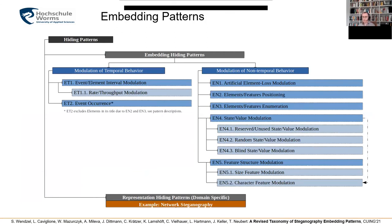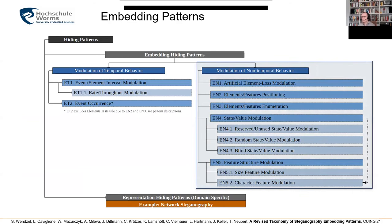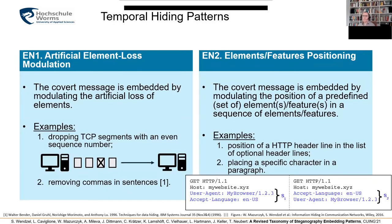Now, looking at non-temporal patterns: first there is artificial element loss modulation, which means we embed the secret information by modulating some artificial loss of elements. For instance, we could artificially drop TCP segments to mimic a reliability feature situation. We could also remove commas in sentences.